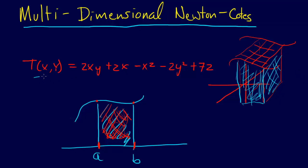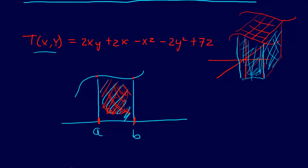We're given this function: T(x,y) is equal to 2xy plus 2x minus x squared minus 2y squared plus 72. This is our function, and this is the problem from page 626 and 627 from the book. We have a plate that's 8 meters long and 6 meters wide, and we're supposed to compute the average temperature and the total temperature. First, let's compute the total temperature.